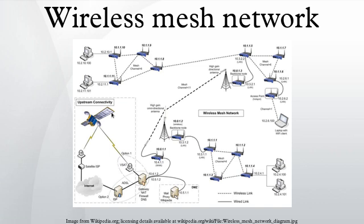Wireless mesh architecture is a first step towards providing cost-effective and dynamic high-bandwidth networks over a specific coverage area. Wireless mesh infrastructure is, in effect, a network of routers minus the cabling between nodes. It is built of peer radio devices that don't have to be cabled to a wired port like traditional WLAN access points do. Mesh infrastructure carries data over large distances by splitting the distance into a series of short hops. Intermediate nodes not only boost the signal, but cooperatively pass data from point A to point B by making forwarding decisions based on their knowledge of the network — i.e., perform routing.